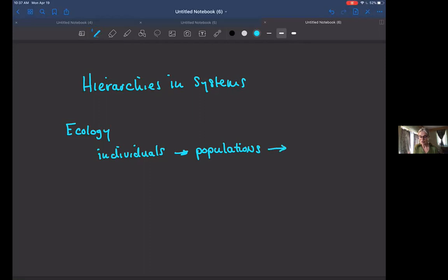So then the next level would be a community. A community is composed of all of the different species, all of the different populations, all of the different individuals in that given area. So you can see how we're putting things together and making this bigger.